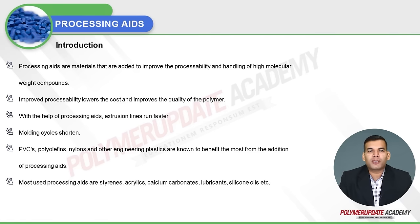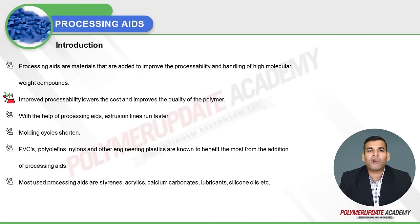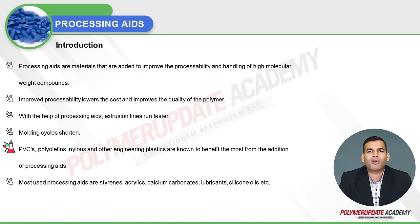Processing aids are materials that are added to improve the processability and handling of high molecular weight compounds. Improved processability lowers the cost and improves the quality of the polymers. With the help of processing aids, extrusion lines run faster and the molding cycles also shorten. PVC, polyolefins, nylons, and other engineering plastics are known to benefit the most from the addition of process aids.